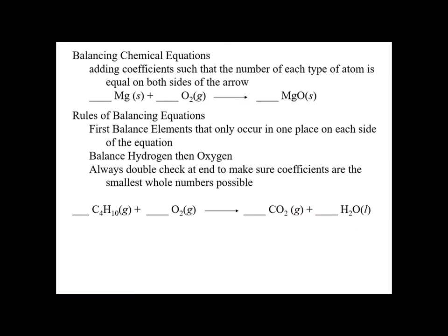To start applying this, we add coefficients such that each atom is equal on both sides of the reaction arrow. For magnesium solid plus oxygen forming magnesium oxide, I work left to right. Magnesium: one and one, so nothing needed. Oxygens: I have two here and only one here, so I put a coefficient of two in front of the magnesium oxide. But now I've changed the magnesiums — two on the right and only one on the left — so I put a two in front of the magnesium on the left.